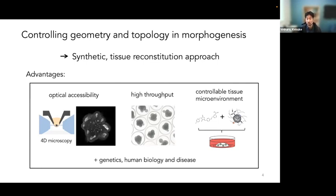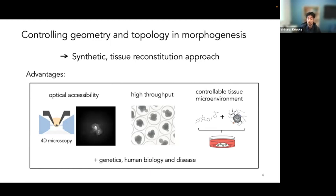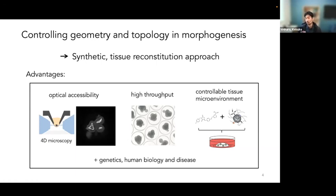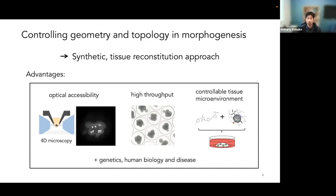Morphology, defined as geometry and topology, is really important for multicellular systems. I'm excited about asking these questions in the context of synthetic systems. By synthetic, I mean tissue reconstitution approaches, which have many advantages. The tissue we're building is directly accessible by microscopy, so we can apply both 3D and 4D microscopy to analyze the tissue architecture quantitatively. We can generate many tissues in high throughput, and because this is an in vitro system, we can really control the physical and mechanical environments.